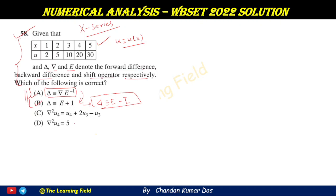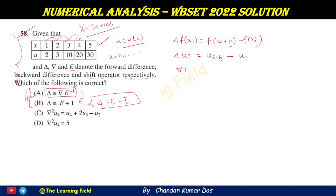We define the forward difference of f(xᵢ) as f(xᵢ + h) minus f(xᵢ). In terms of u, Δuᵢ equals u(ηᵢ + h) minus u(ηᵢ), where h is the uniform interval length starting from x₀. For the backward difference operator ∇, we define ∇f(xᵢ) equals f(xᵢ) minus f(xᵢ − h).